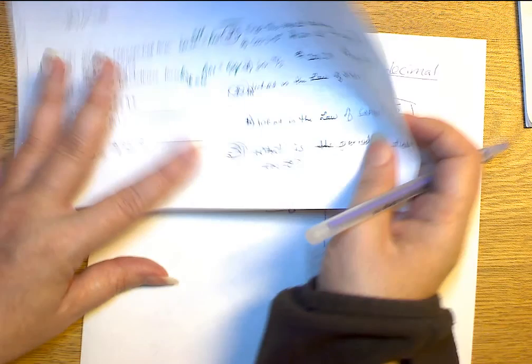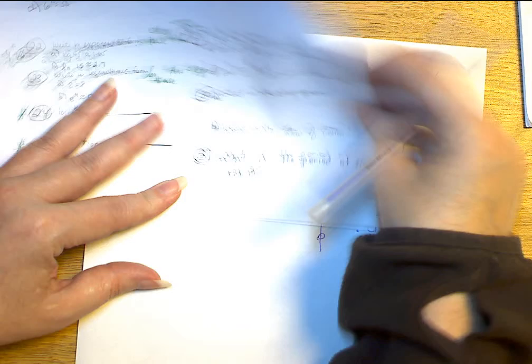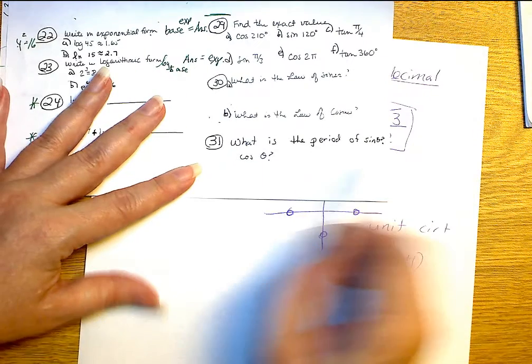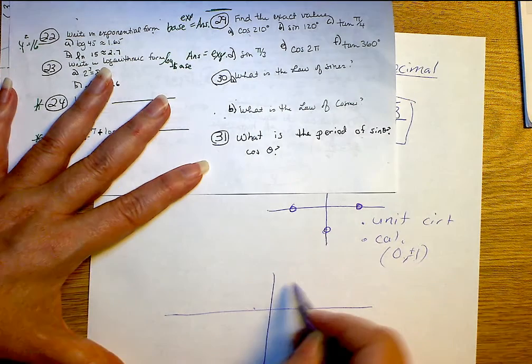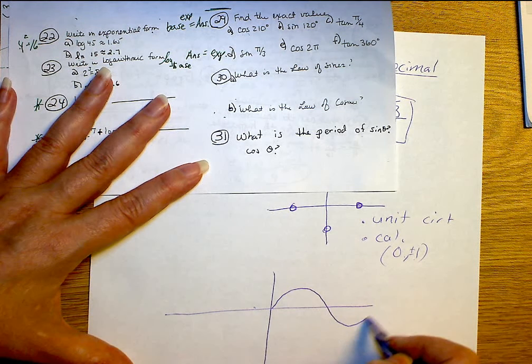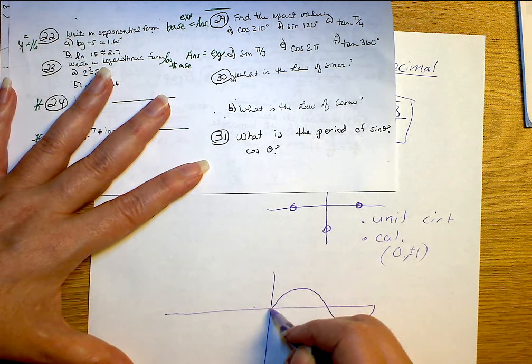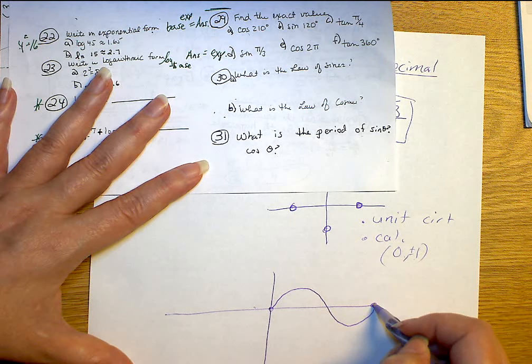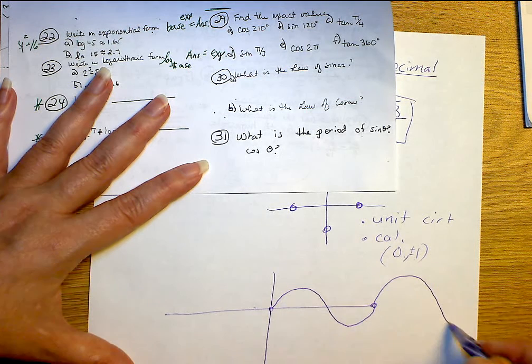Remember, a period, it says, what is the period of sine and cosine? A period is how long does it take your graph from where it starts to where it finishes? So from here to here, how long is it? So, remember, it's going to, and it's going to repeat over and over again.